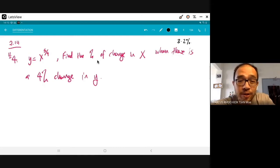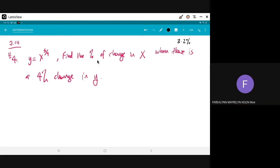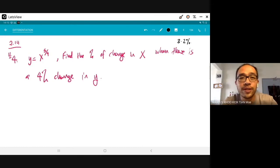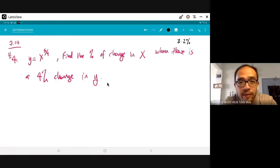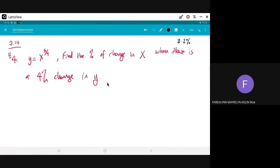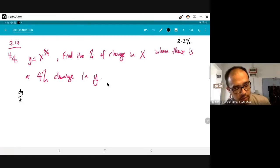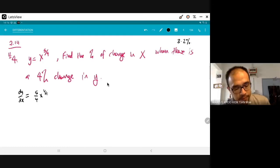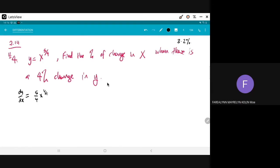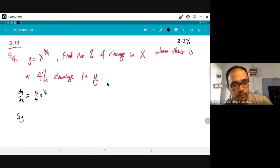Did anybody get 3.2? Feraline: Me, sir. You? Who is you? Feraline. Oh, Feraline. Can you tell me how you did it? First, I differentiate the equation. Okay, so tell me what's the differentiation? 5 over 4, x to the power of 1 over 4. Okay.